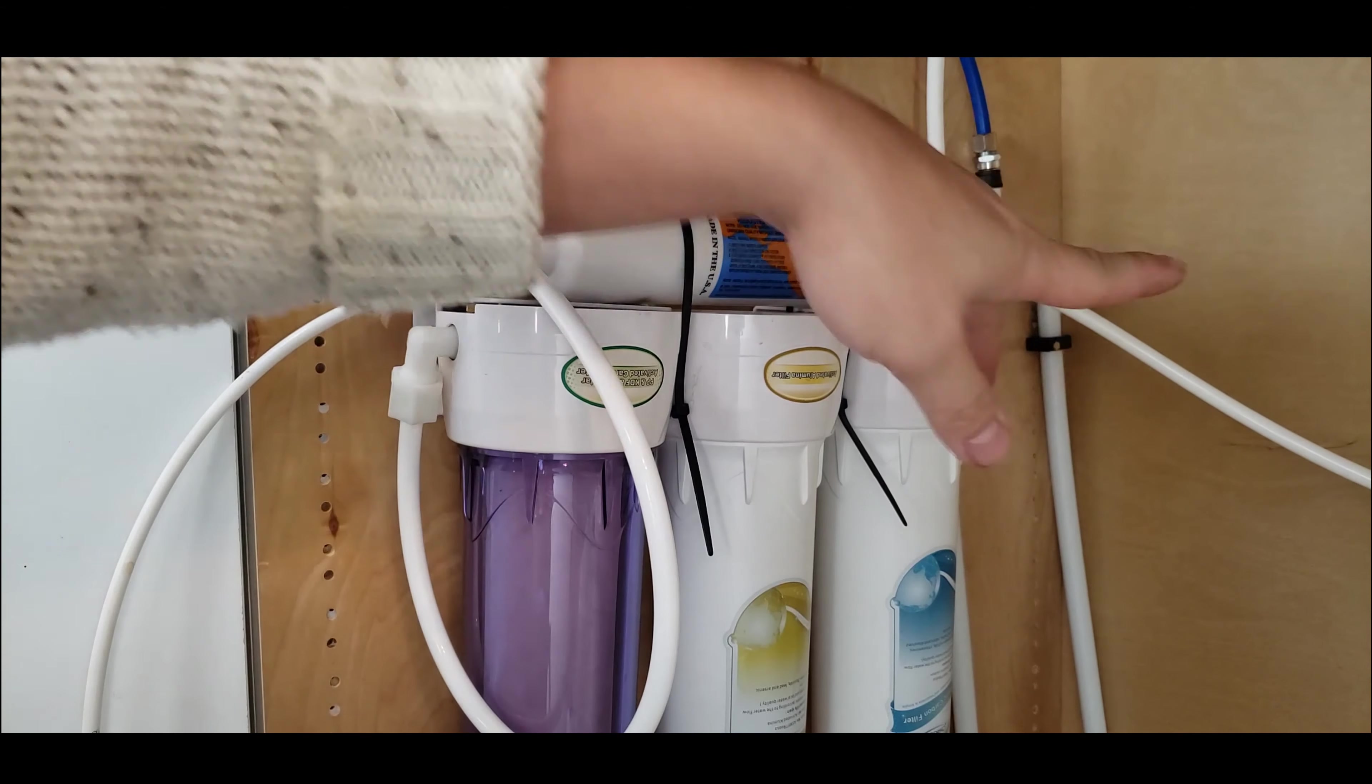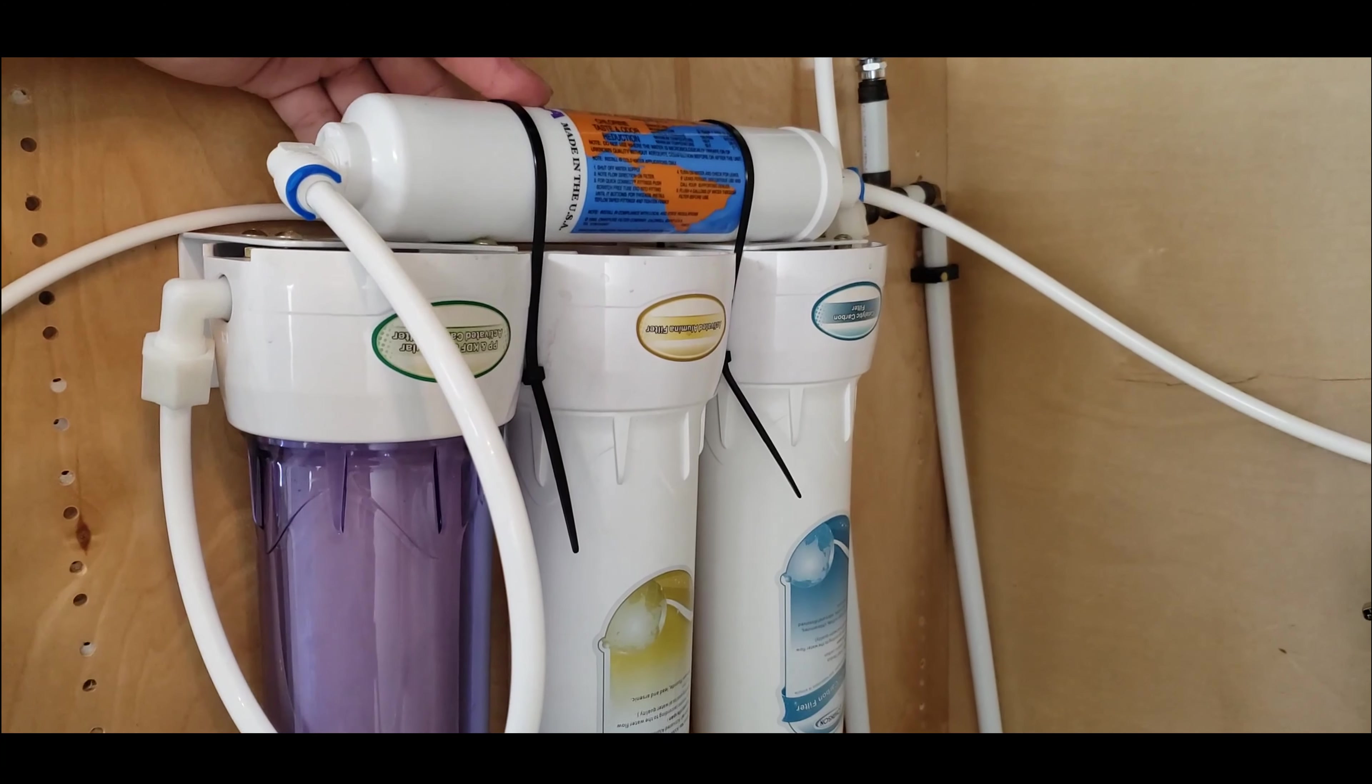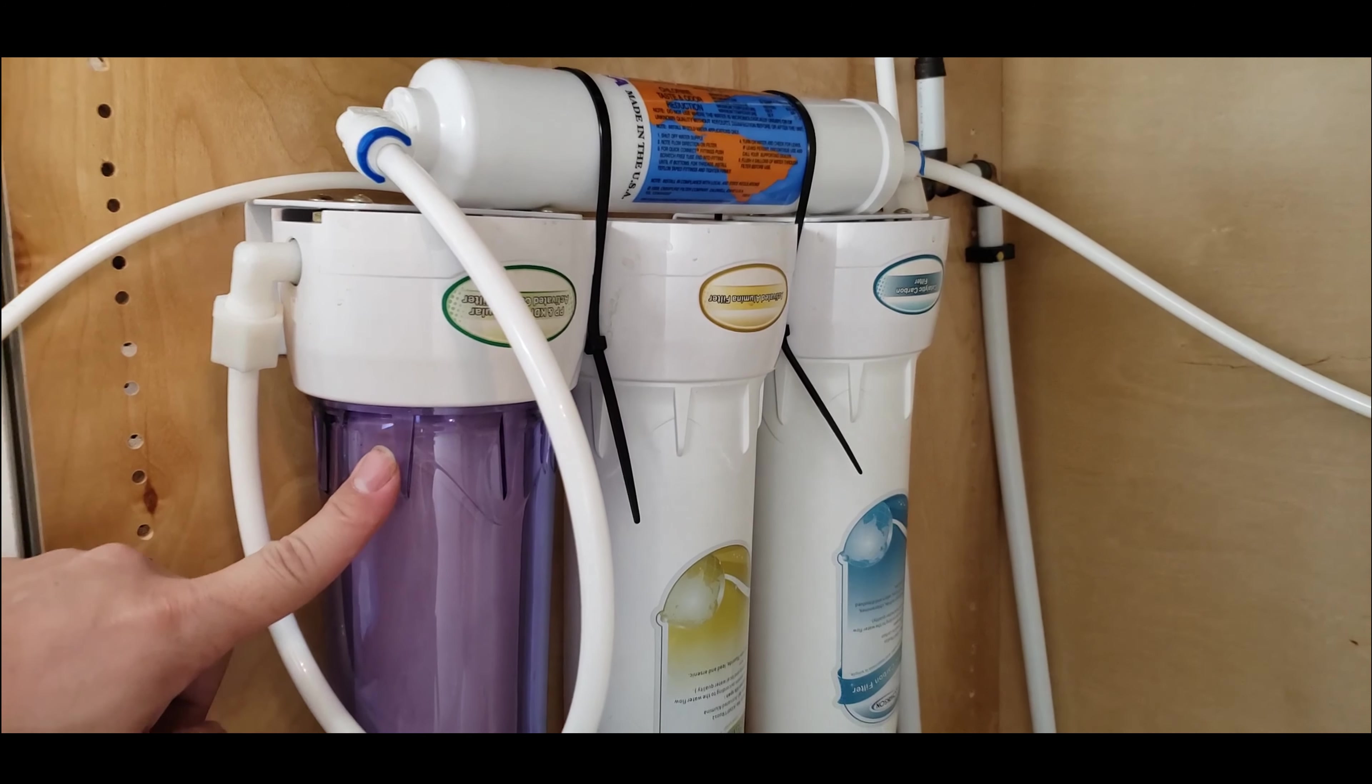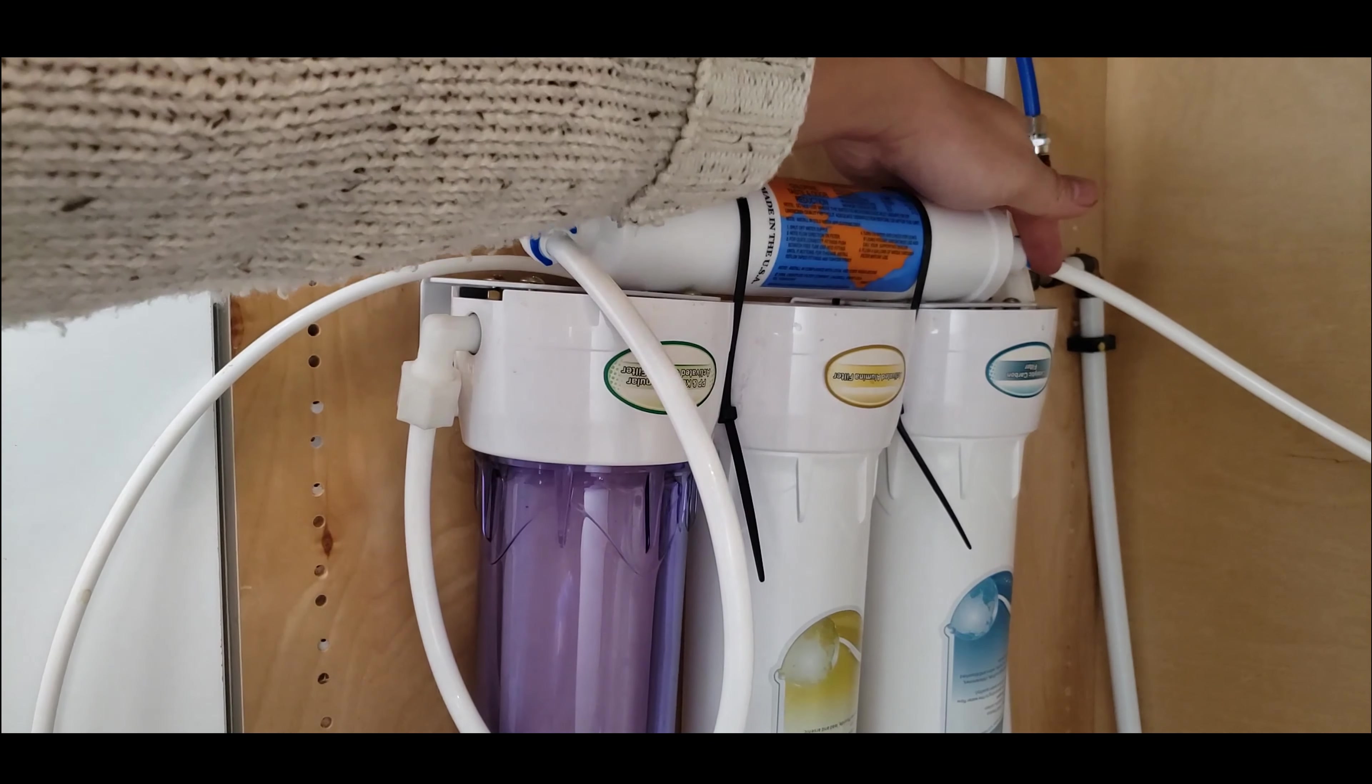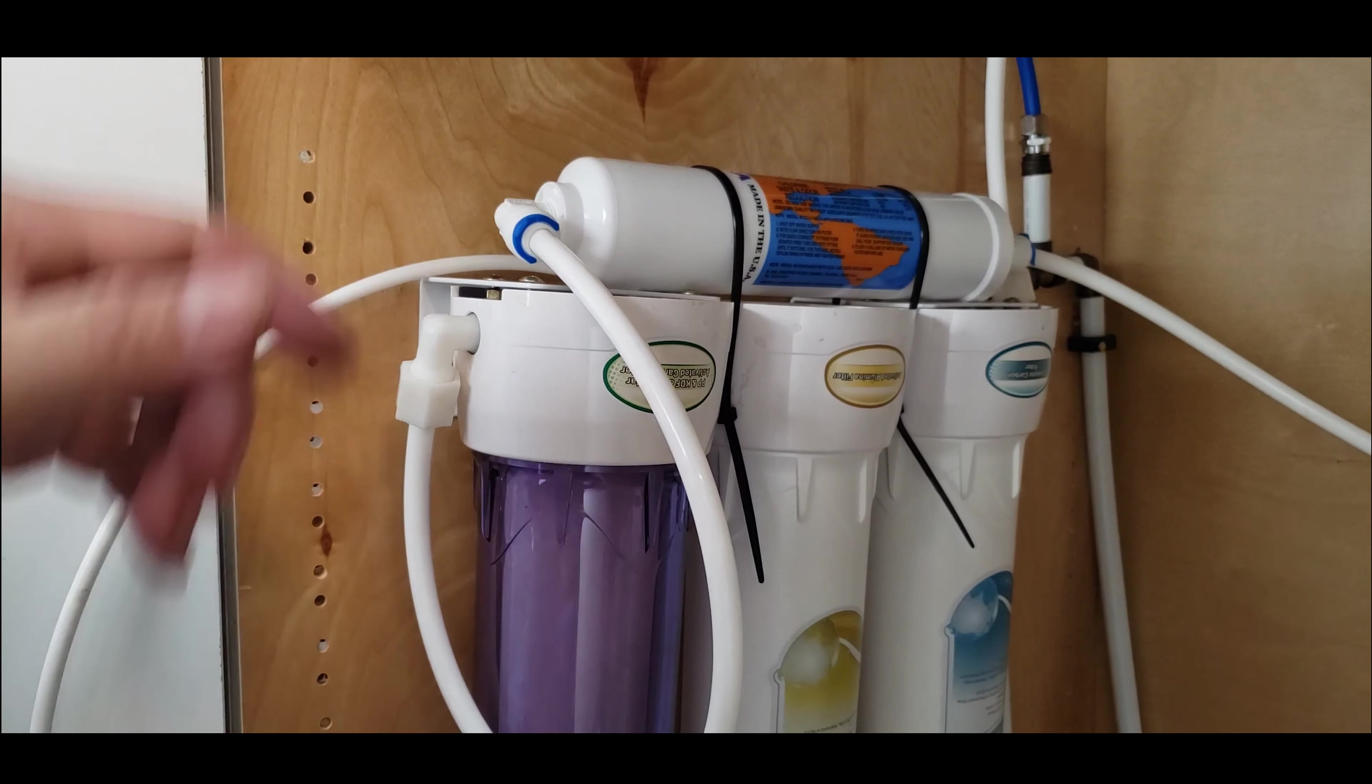This is how it works now. From the tee, it goes into the new inline filter - it can be either the remineralizer or the fluoride filter. It comes out and goes right into the unit. That's it. If all lines are secure, you can turn the water back on and you're good. Check for leaks, especially where you just installed. Give it a run and make sure nothing will fall out, and you're all good.